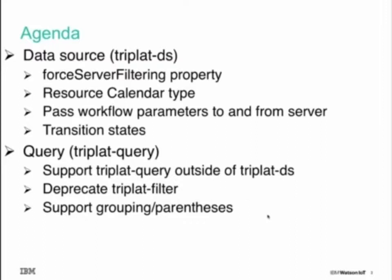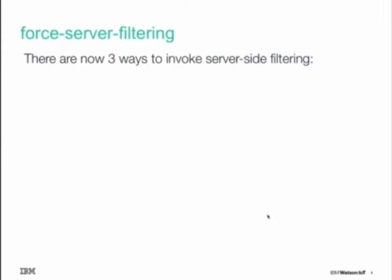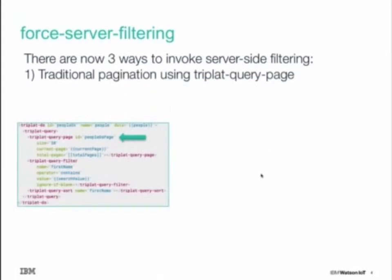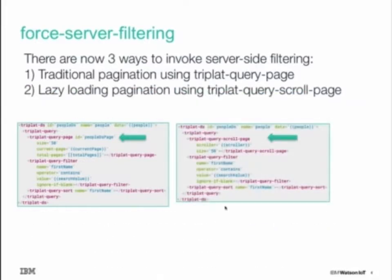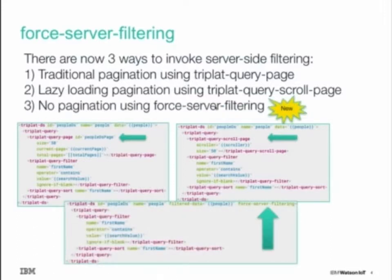For the forced server filtering property, there are now three ways to invoke server-side filtering. The first way is traditional pagination using TriPlat query page, which existed in the previous release. The second way is lazy loading pagination using TriPlat query scroll page. What's new for this release is that if you don't want to use pagination but still want server-side filtering, we've added a new property on TriPlat DS called force server filtering. Specifying that property will cause filtering to be done on the server side as opposed to the client side.